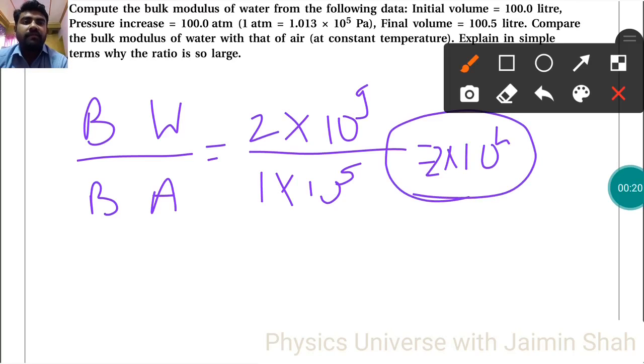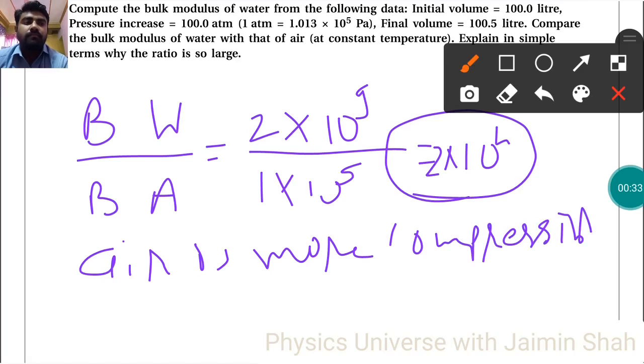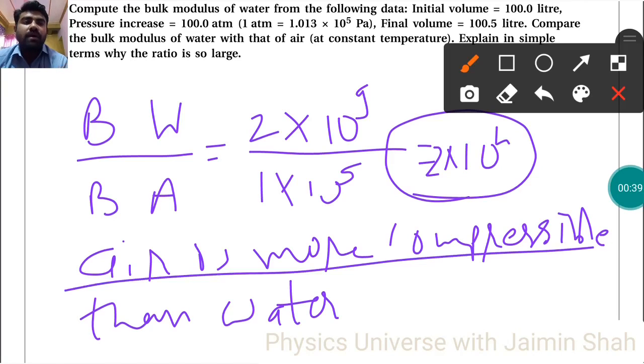Why is this ratio so large? Because air is more compressible than water. That's why this ratio is so much larger.